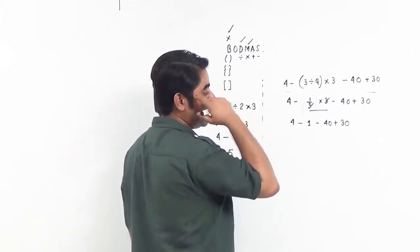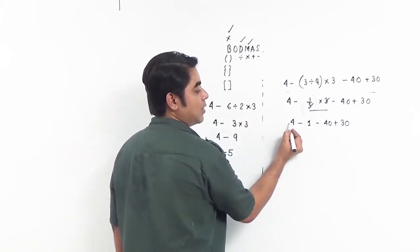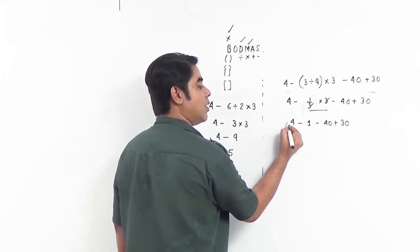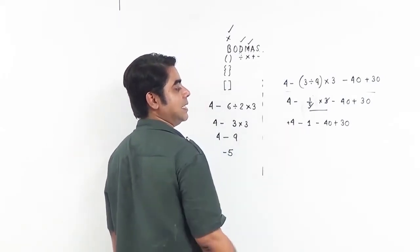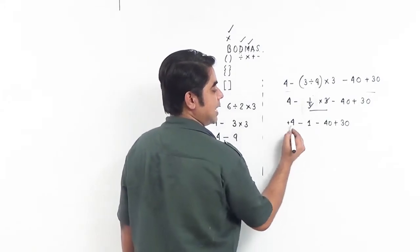We will do the additions first. Now 4 does not have any sign in front of it, that means automatically we assume there is a plus sign here. So do the additions first, add this and this.